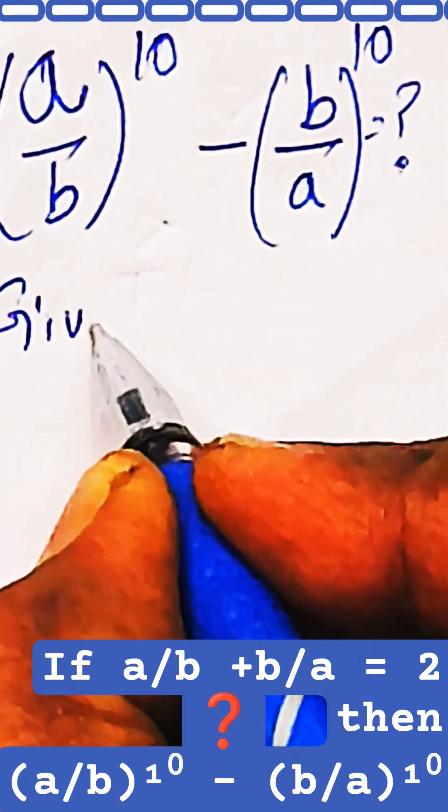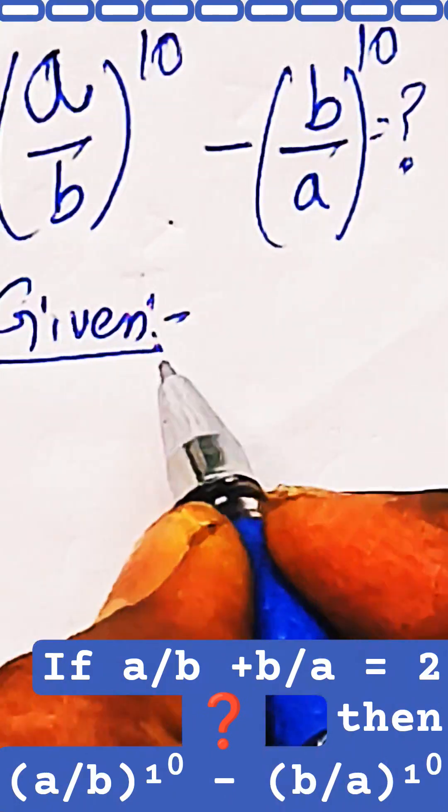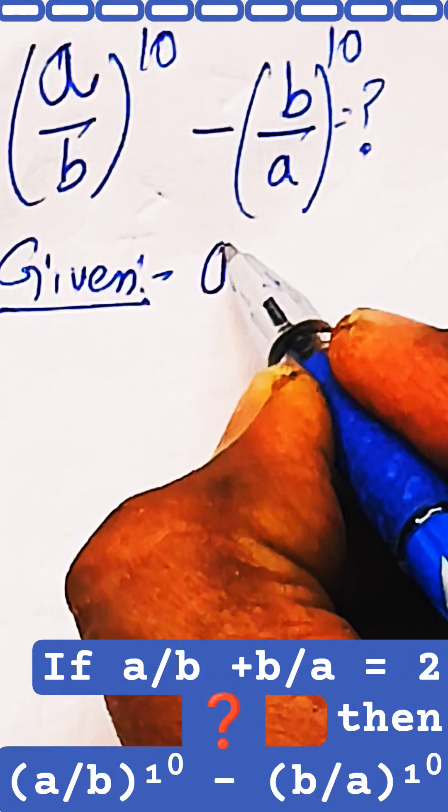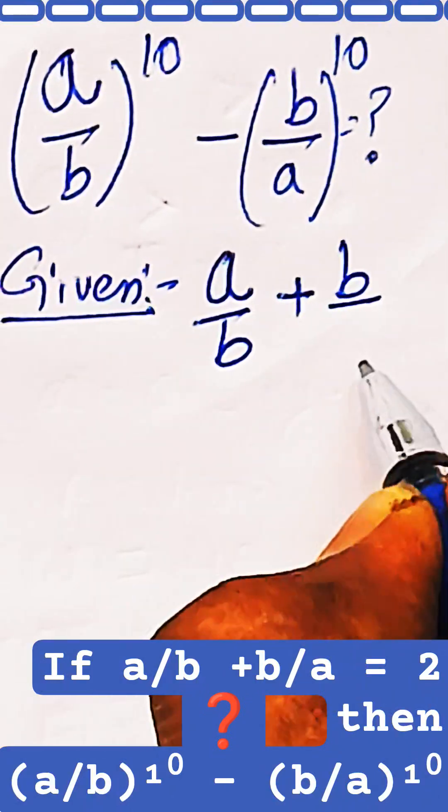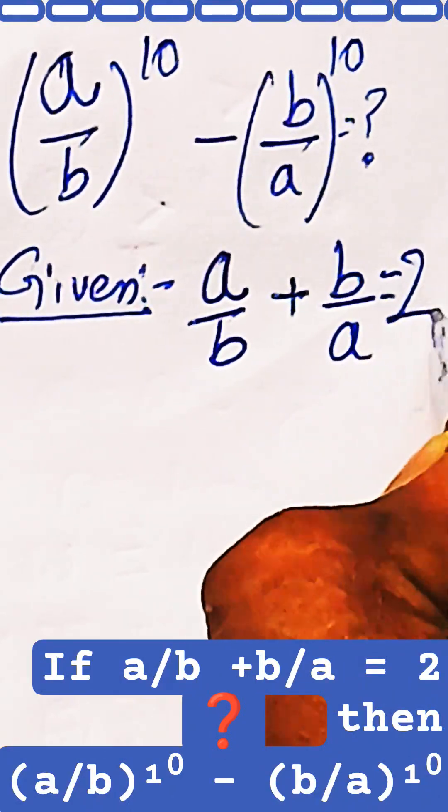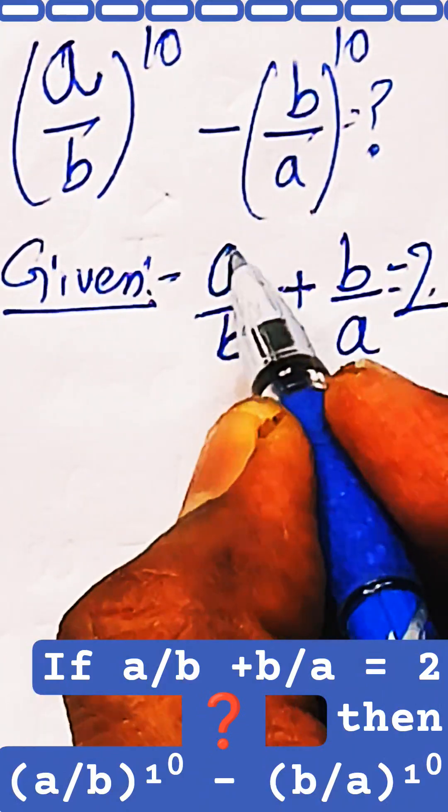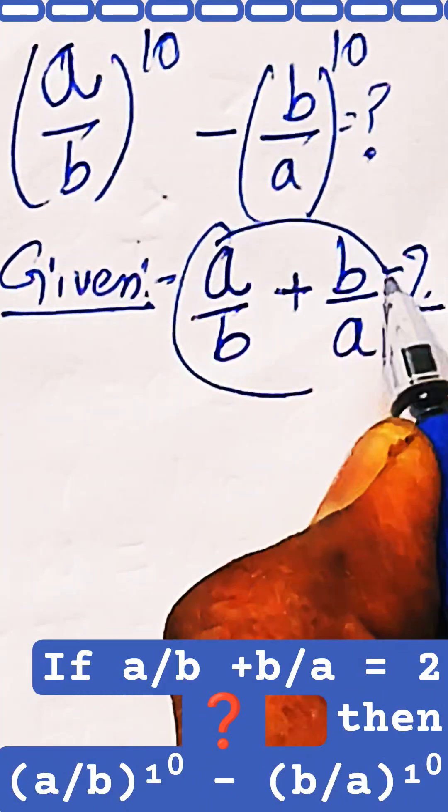The data given in the question is that a/b plus b/a is equal to 2. This is given to you. Just simplify this left-hand side.